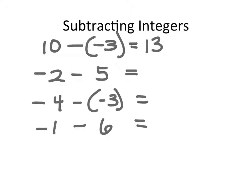One way we can help students understand this is by having them do the reverse operation to check. When we teach subtraction with whole numbers, we often have them check their answers by adding — the answer they get when they subtract, they add to the number they had subtracted and they should end up with the number they started with. Our problem was 10 take away negative 3 equals 13, so that means 13 plus negative 3 should equal 10. And we can see that it does.